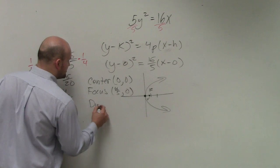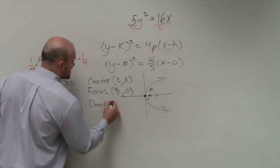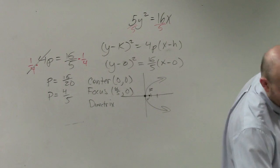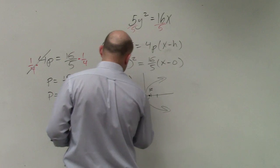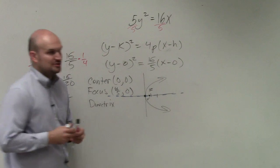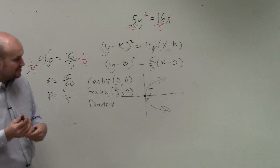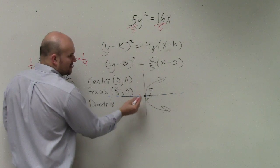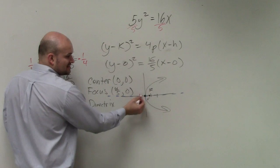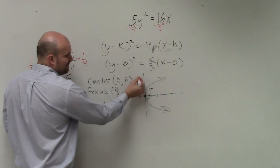And then my directrix—remember, your directrix is perpendicular to your line of symmetry. So if we have a graph that's opening to the right, we know the line of symmetry is now going to be a horizontal line. So the directrix is the same distance, equal distance, from the focus, but now it's going to be a vertical line.